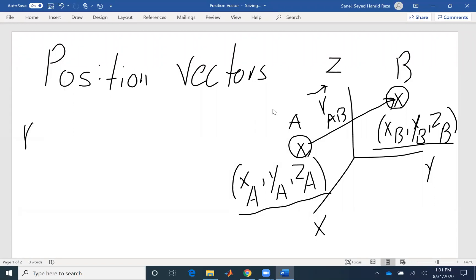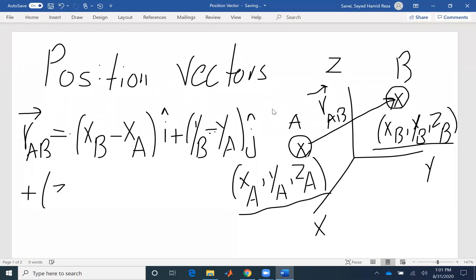If you want to find the position vector, that would be the coordinate of B minus the coordinate of A. So RAB, which is a vector, would be (xB minus xA) i hat plus (yB minus yA) j, as well as (zB minus zA) k.